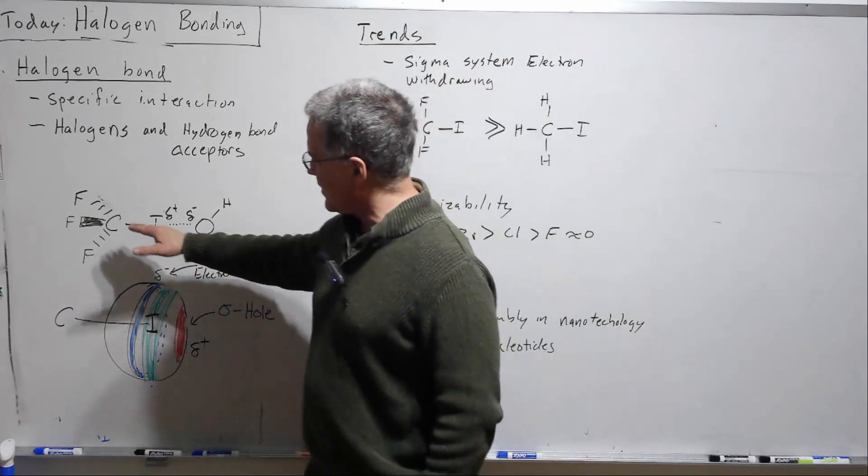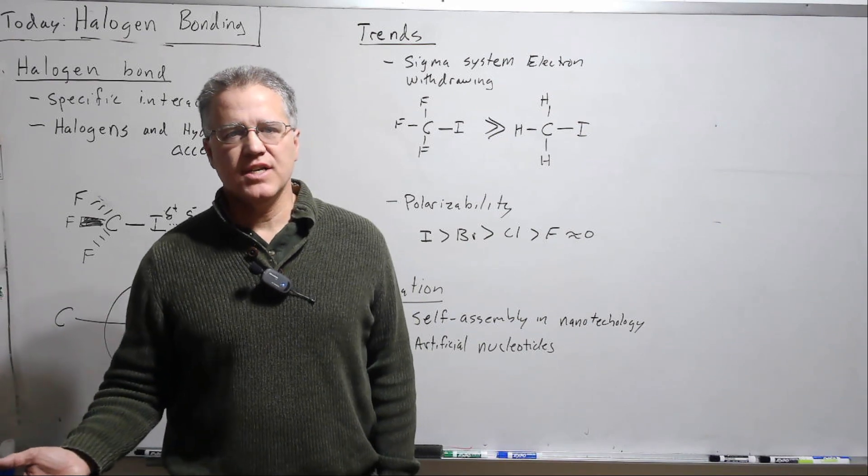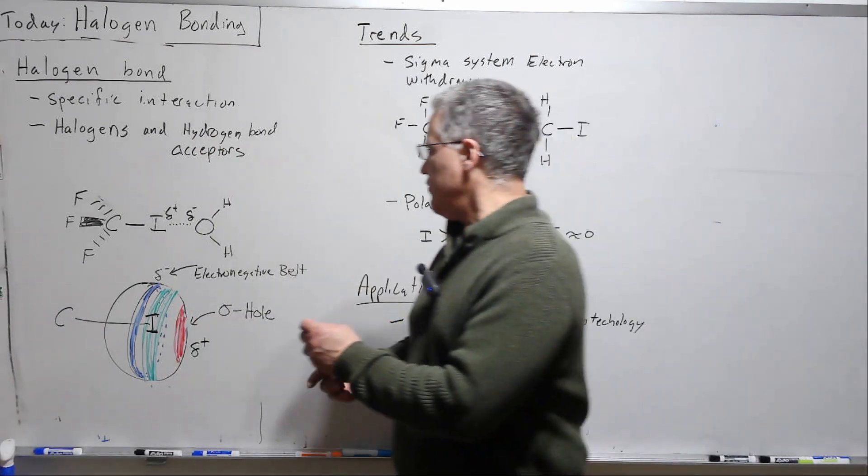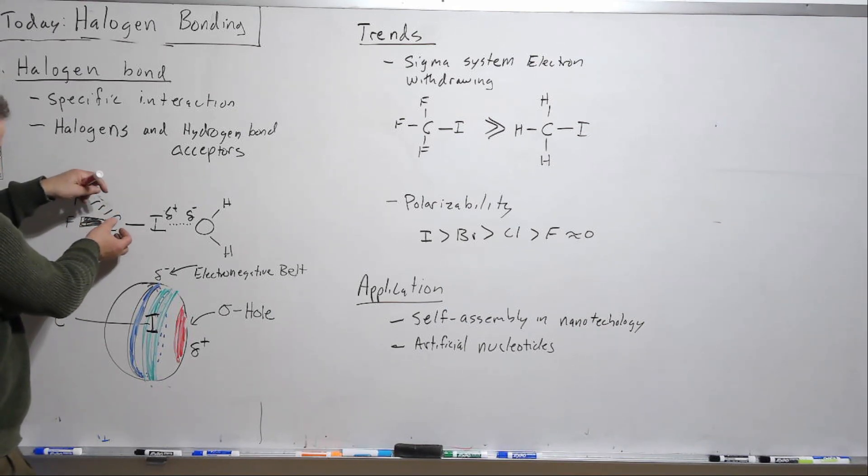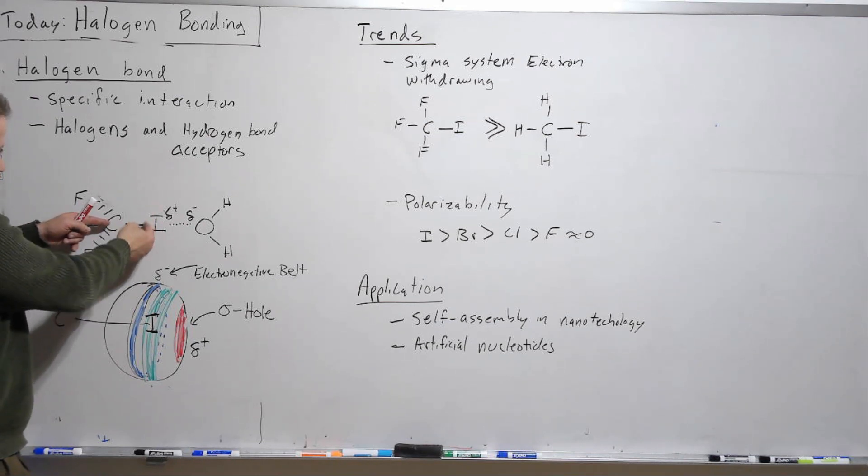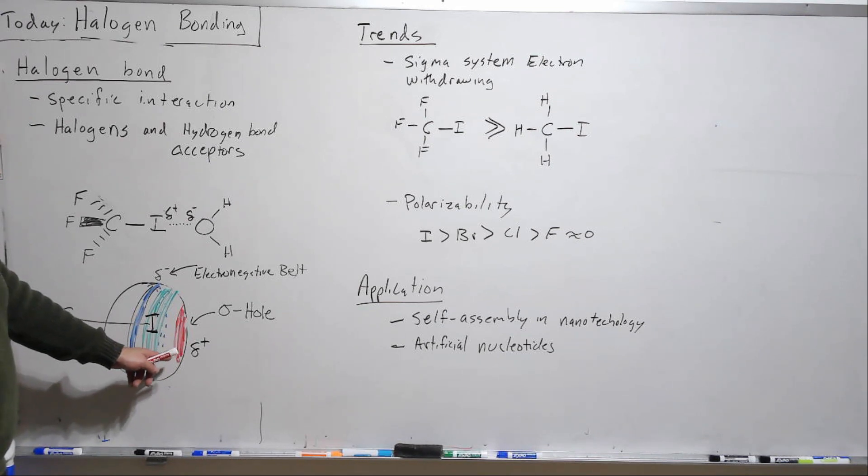You may have noticed here I've got fluorines rather than what might be more typical hydrogens. And again, this is due to the mechanism. If we have very electronegative system back here, that will pull more of the electron density. So these fluorines will be pulling electron density through sigma bonds away from the carbon, which will make the carbon want to pull more away from the iodine and leaving a larger more pronounced sigma hole.